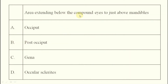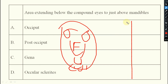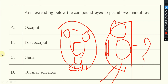Next question: the area extending below the compound eyes to just above the mandible is known as what? In the frontal view, the compound eye is there, then frons, clypeus, labrum, and mandible. Viewed from the side, the area between the compound eye and mandible is known as gena. The answer is gena.